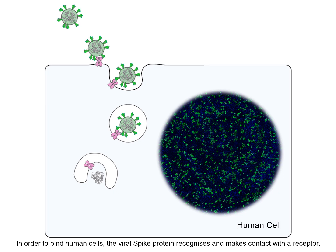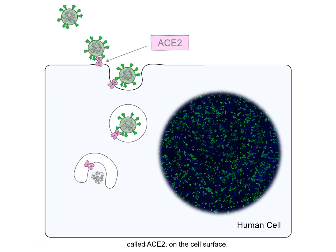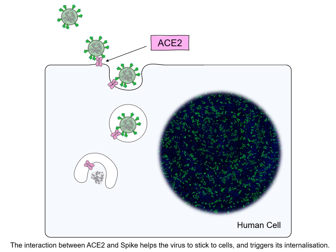In order to bind human cells, the viral spike protein recognizes and makes contact with a receptor called ACE2 on the cell surface. The interaction between ACE2 and spike helps the virus to stick to cells and triggers its internalization.